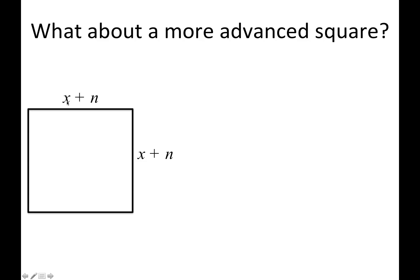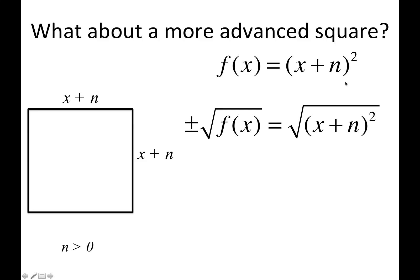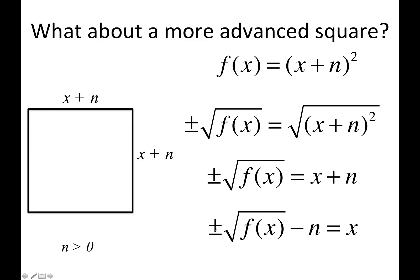But what if we do a more advanced square? In this case it's not much more advanced, but it's (x + n) by (x + n) where n > 0. The area would be (x + n)². To solve for x, you take the square root of both sides — that gets rid of the squared — and you end up with ±√f(x). Simplifying, you subtract n from both sides and get x = ±√f(x) − n.